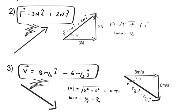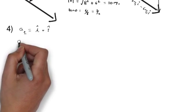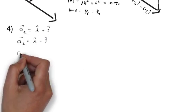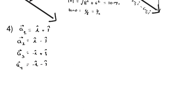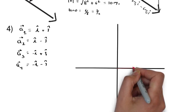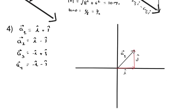Example 4: we discuss four vectors — a1 = î + ĵ, a2 = î − ĵ, a3 = −î + ĵ, and a4 = −î − ĵ. All have the same magnitude but different directions. For a1 = î + ĵ, we move î along the X axis then ĵ along the Y axis; the resulting vector is î + ĵ.